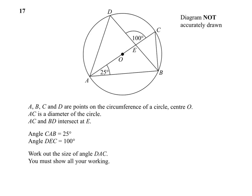Angle CAB is 25 degrees, angle DEC is 100 degrees. We have to work out the size of angle DAC. I've got to show all our working.